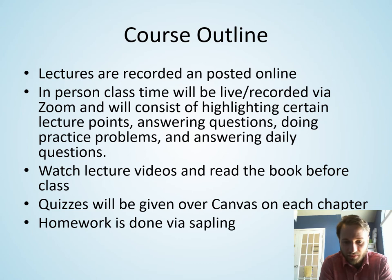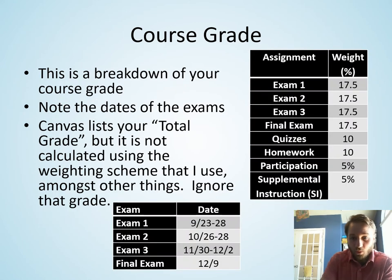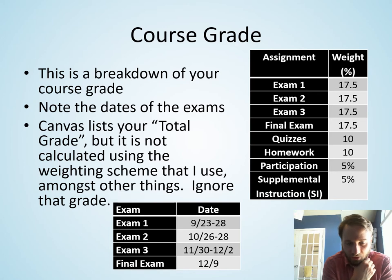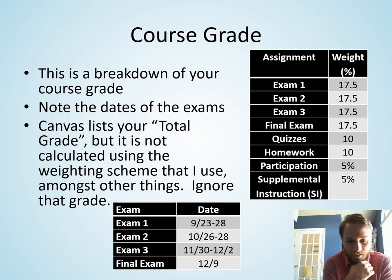Quizzes on each chapter will be given on Canvas, and homework will be done via Sapling — you'll need to create a Sapling account. The course grade is broken up into three regular exams and a final, plus quizzes, homework, a participation grade from daily and weekly short multiple-choice questions, and a supplemental instruction grade based on attending SI sessions. Exam dates are listed and will not change.